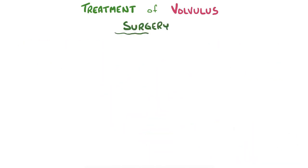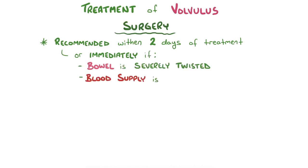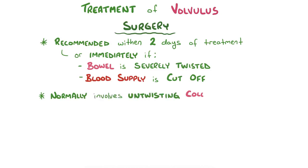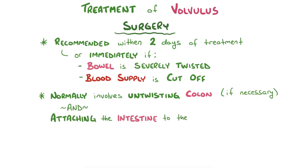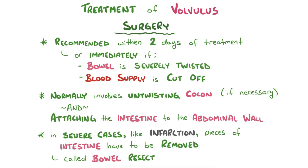Surgery is usually recommended within two days of receiving treatment, or in some cases should be performed immediately — such as if the bowel is severely twisted or if the blood supply is cut off. The normal surgical procedure involves untwisting the intestine and attaching it against the abdominal wall to prevent future twisting. In severe cases like an infarction, pieces of the intestine may have to be removed in a process called bowel resection before the intestine can be reattached.